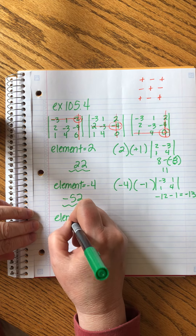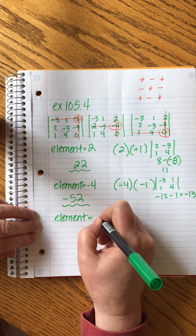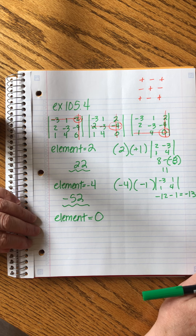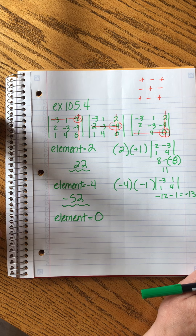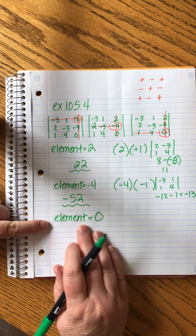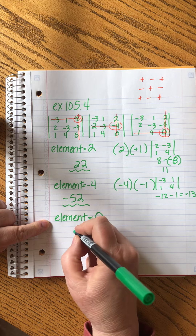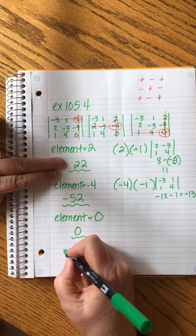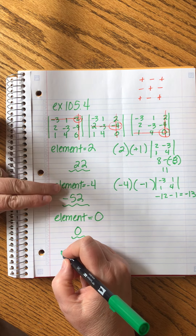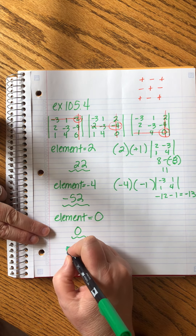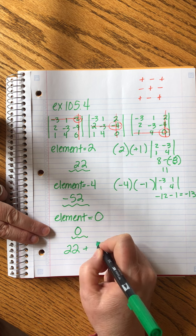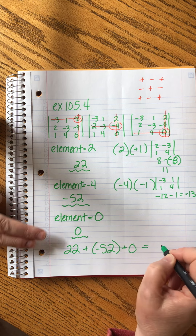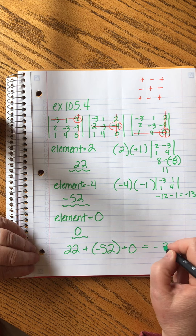And then our last one: as soon as we see that the element is 0, that's our answer for this piece. Now we add the three different bundles together: 22 plus minus 52 plus 0 equals negative 30. And that's our final answer.